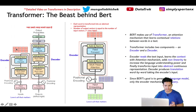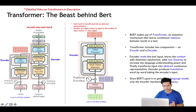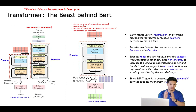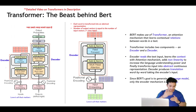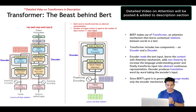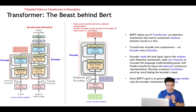Once the encoded representations of words are available, they are fed to the decoder part of the transformer to generate the final translation. The words are transformed into their encoded representation by passing through multi-headed attention. I will make a detailed video on attention, self-attention, and multi-headed attention in my channel.